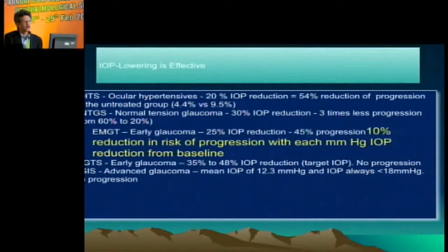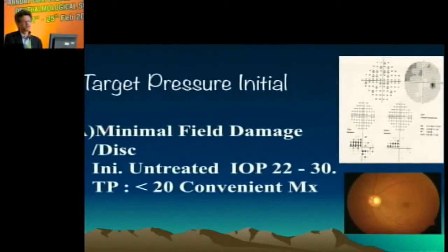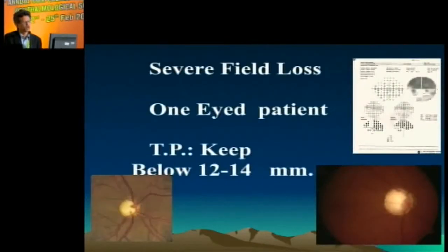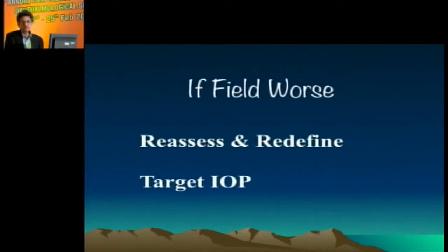We have to decide how low to keep the intraocular pressure. If the fields and discs are fairly normal, keeping pressure below 21 is acceptable. For moderate damage, 14 to 16 mmHg should be the first target. For very advanced damage, we should keep pressure below 12. This represents the initial pressure goal with the first medication.